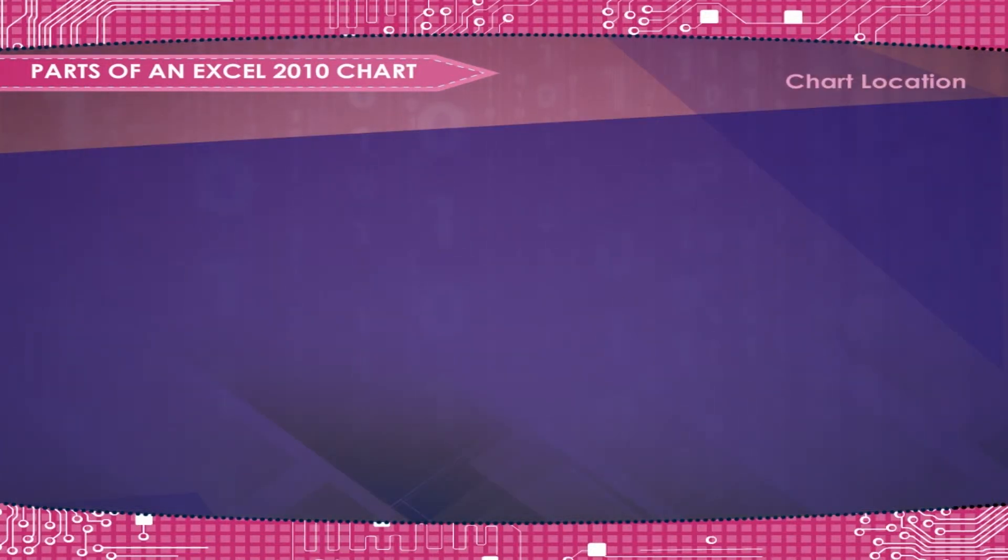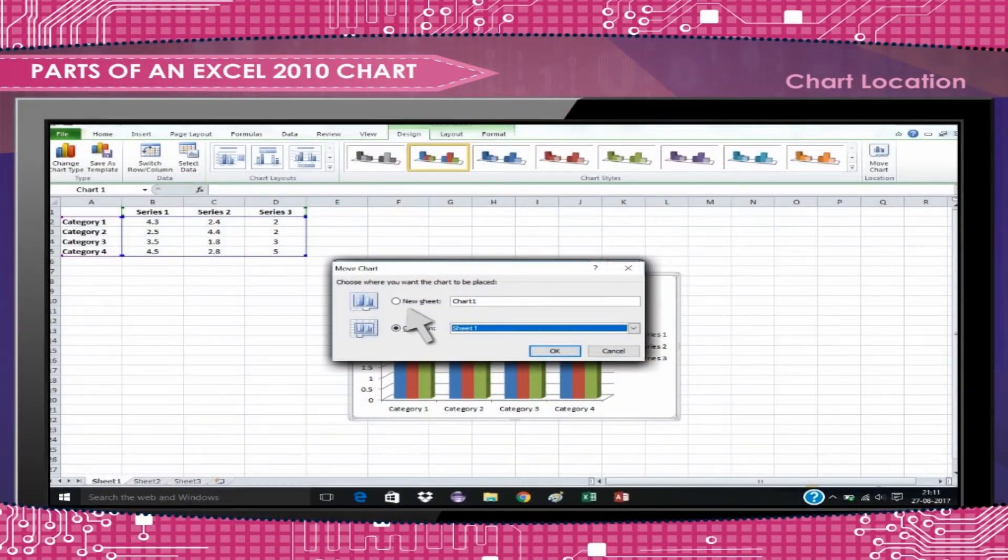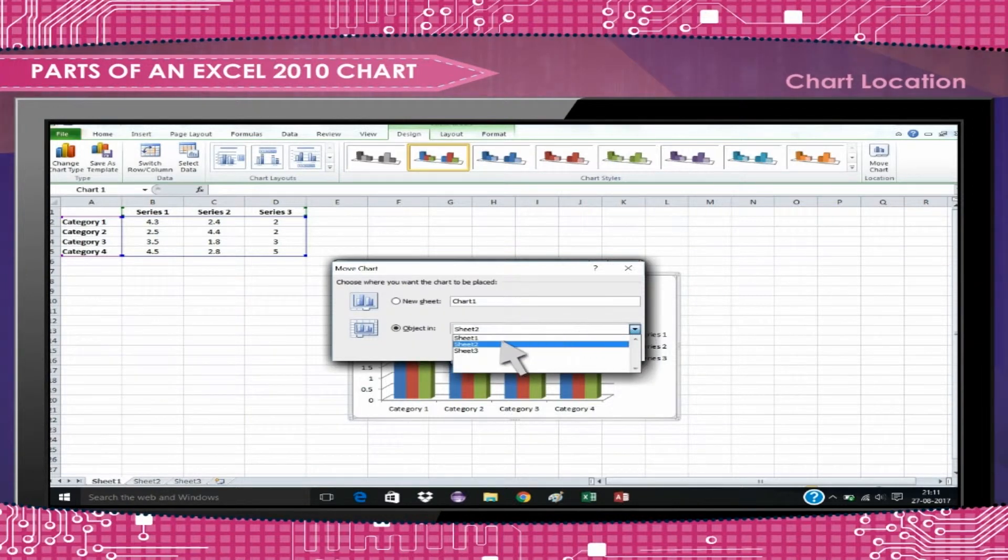Chart Location: Click As New Sheet if the chart should be placed on a new blank worksheet or select As Object In if the chart should be embedded in an existing sheet and select the worksheet from the drop-down menu.